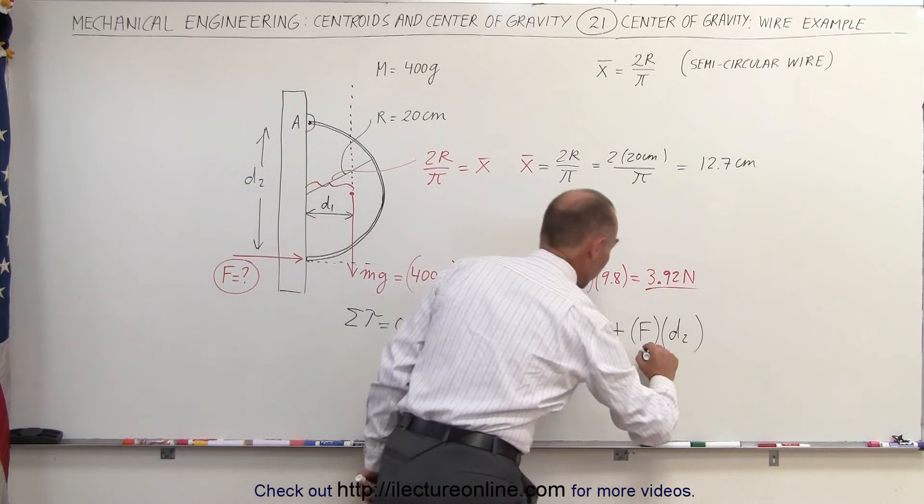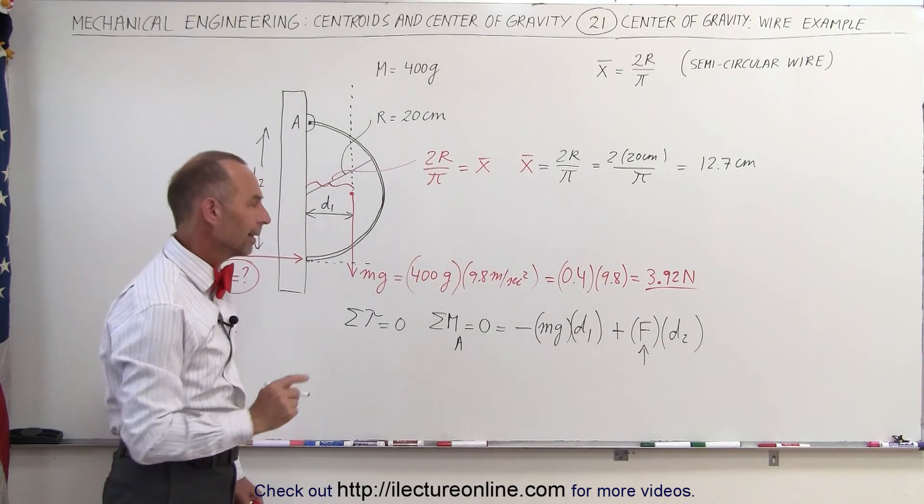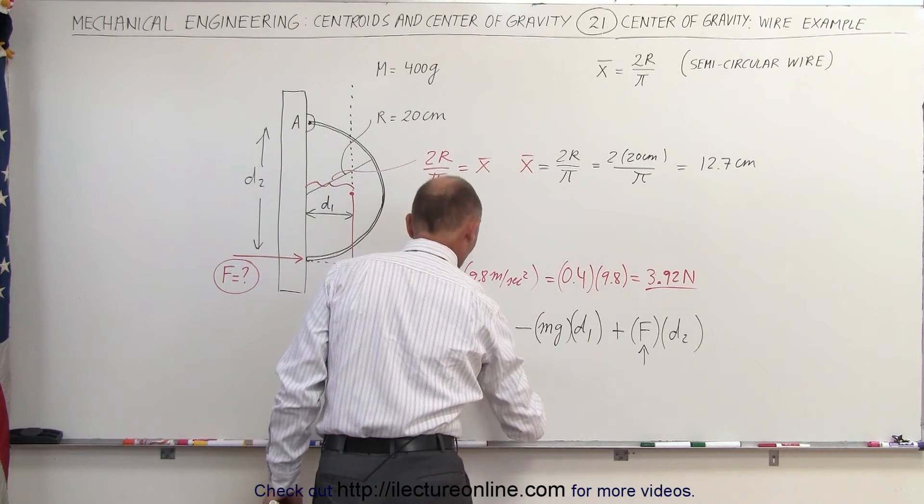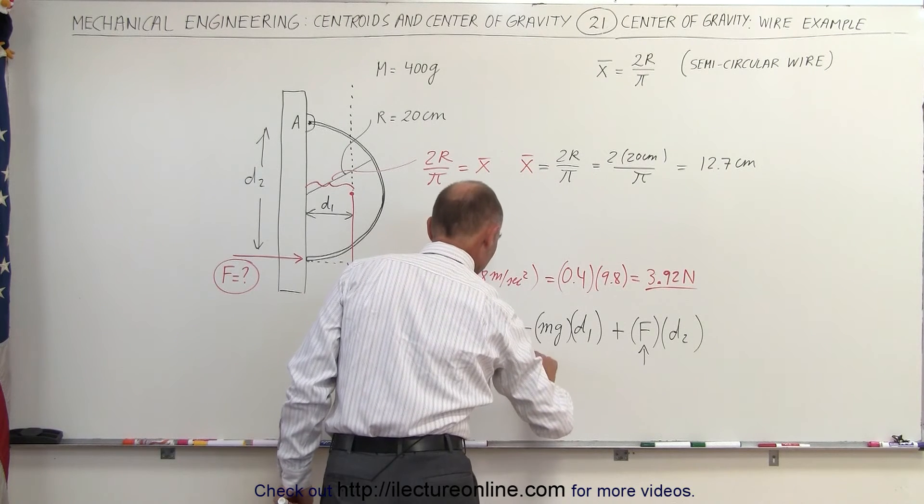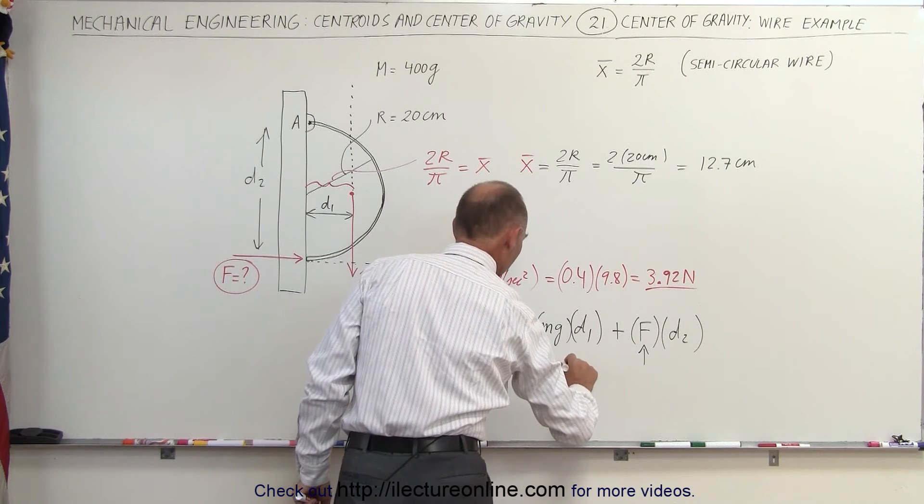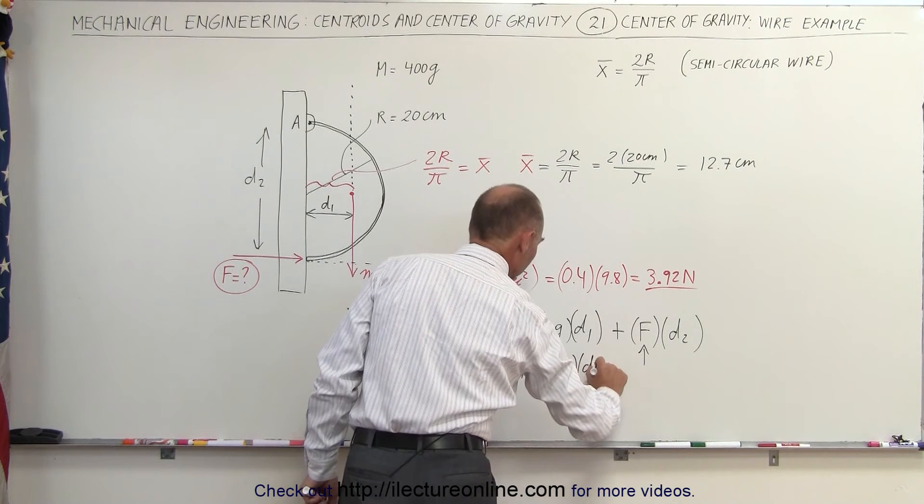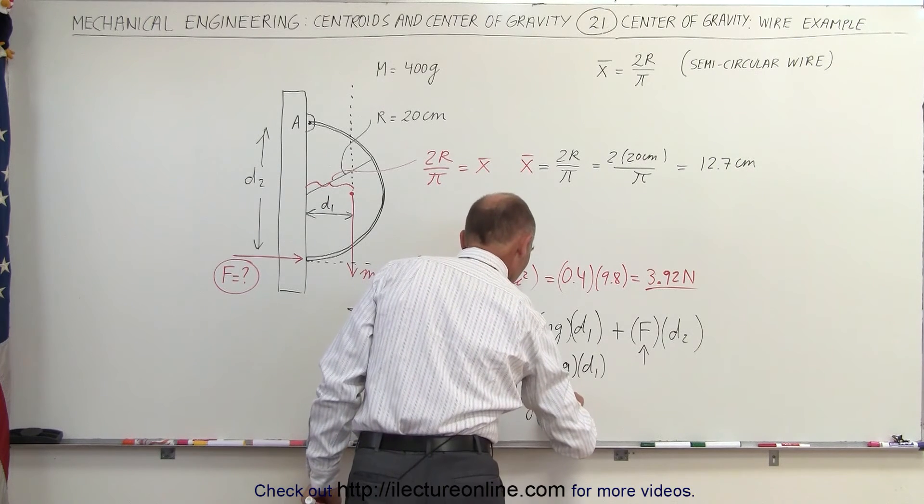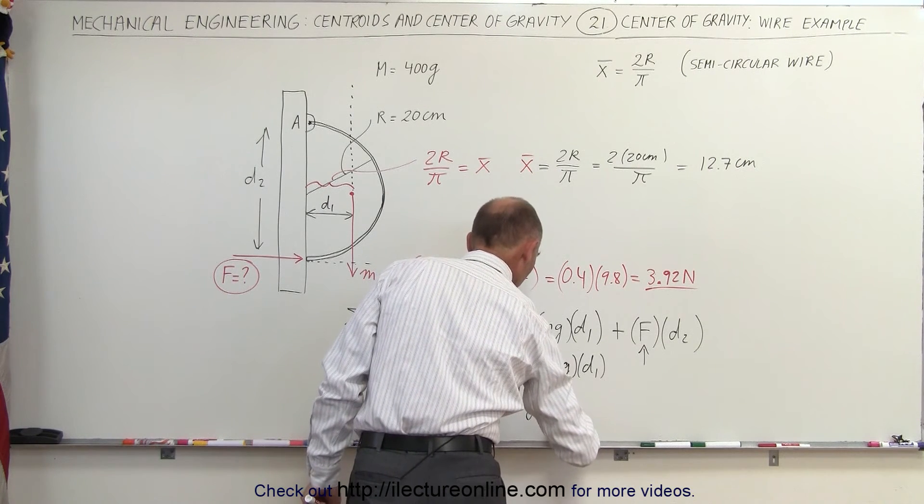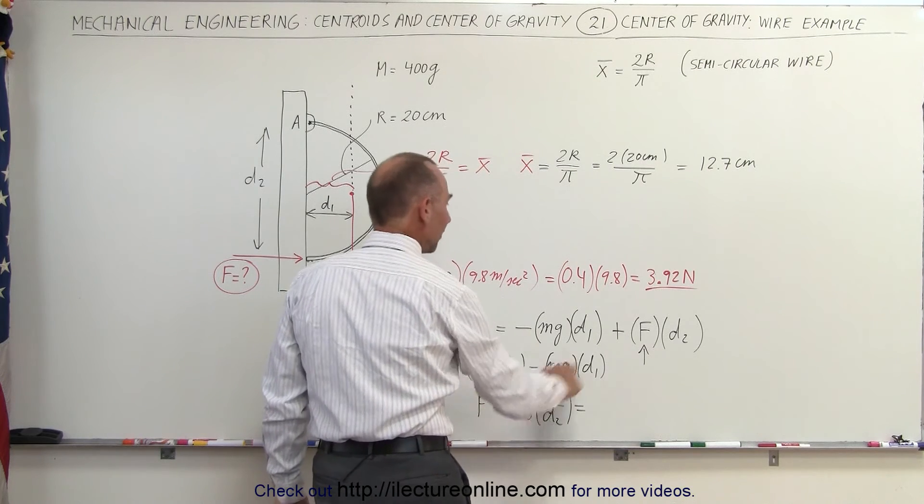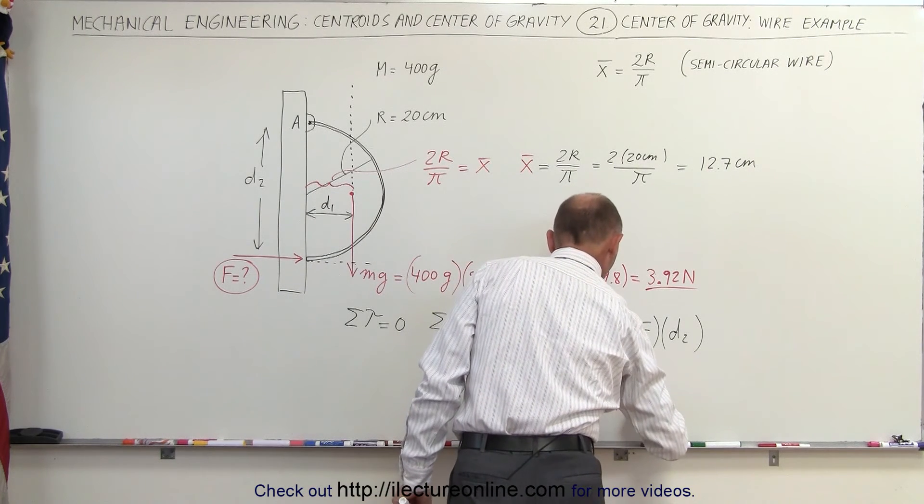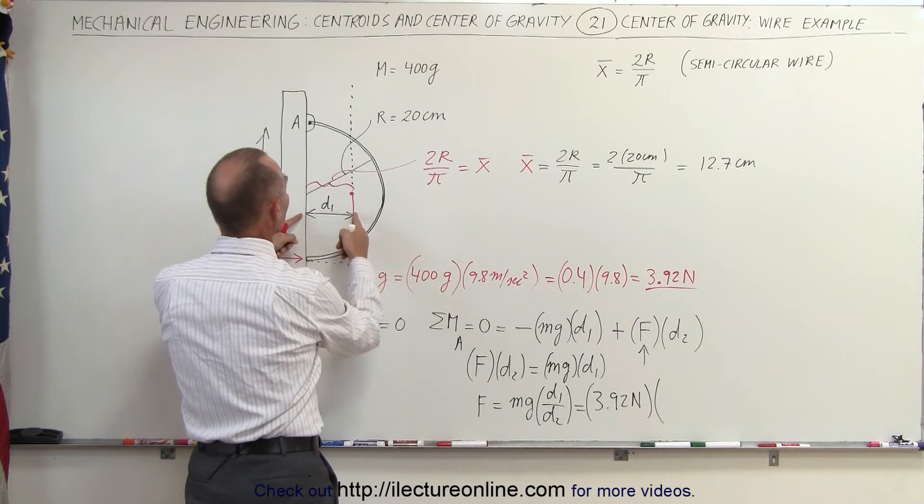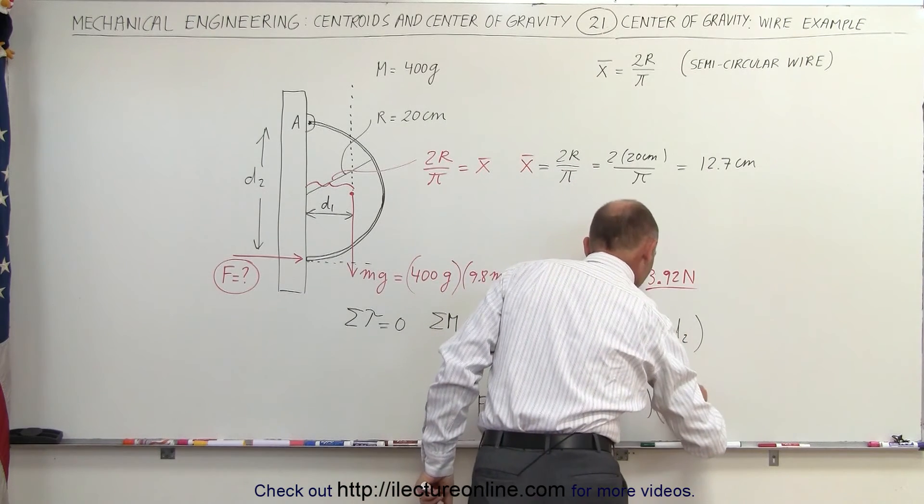The only unknown is the force right here. Let's solve for that force by moving this over to the other side, turning the equation around. So force times distance 2 equals mg times distance 1. Or finally, the force equals mg times the ratio of distance 1 divided by distance 2. The mass times gravity was equal to 3.92 newtons. Multiply times the ratio of distance 1, which is the x-coordinate of the center mass. We found that to be 12.7 centimeters.